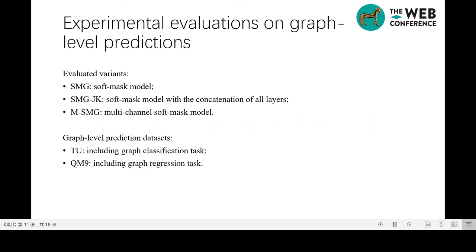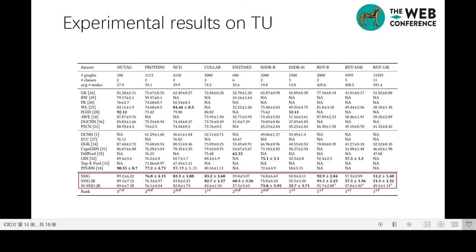We evaluate our proposed soft-mask model on TU and QMN datasets respectively, including the original soft-mask model and its multi-channel variant. This table presents a summary of classification accuracy on TU datasets. Higher is better. SMG model achieves the top two performances in 9 out of 10 datasets, and they are more competitive on large graphs such as CoLab and 3 Reddit datasets.